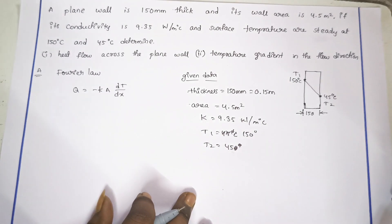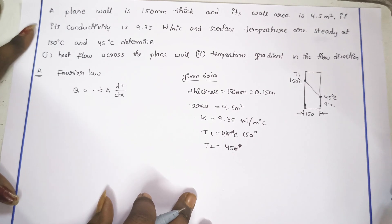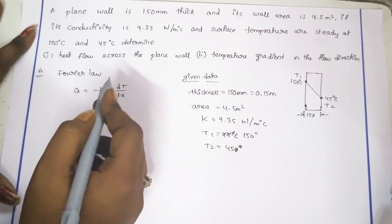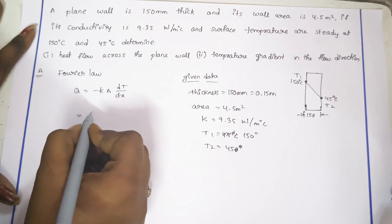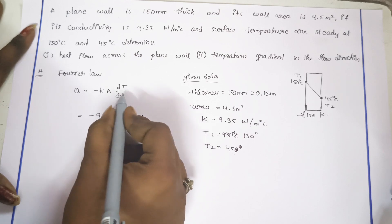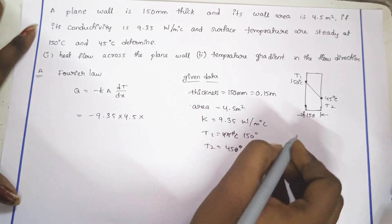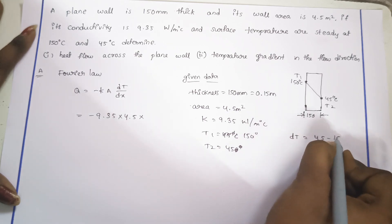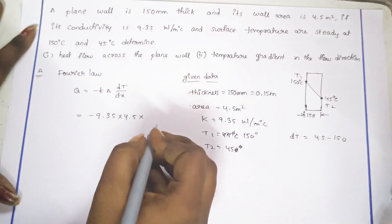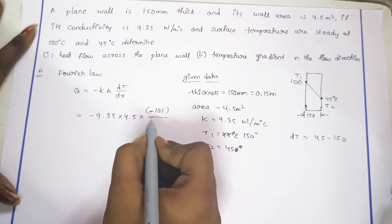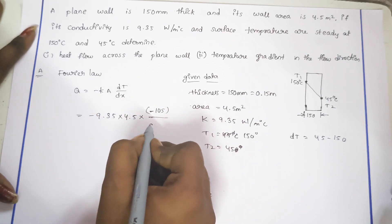Now we calculate the heat flow across the plane wall. Q is equal to K into area into dT, where dT is T2 minus T1, which is 45 minus 150, giving us minus 105. dx is equal to the thickness, which is 0.15 m.